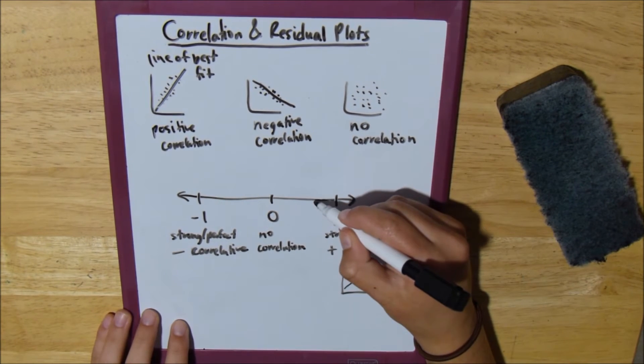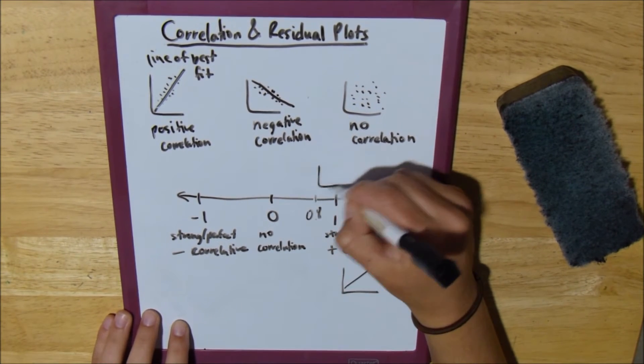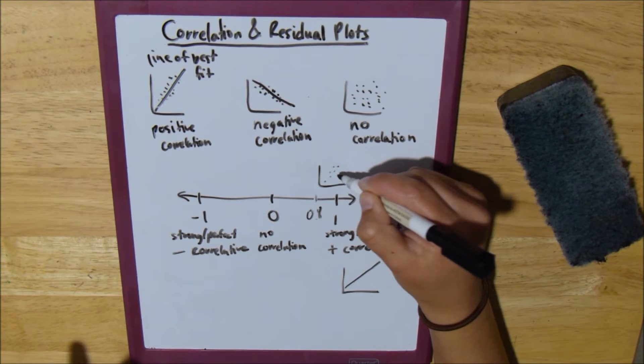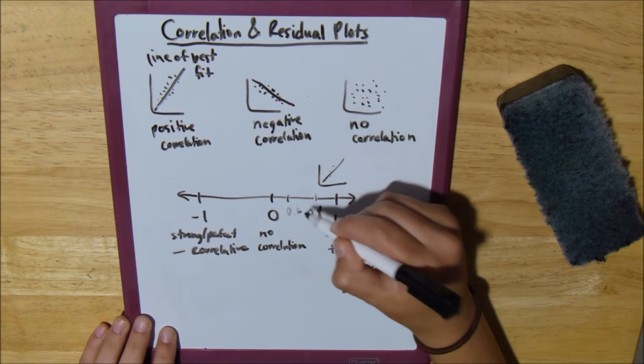Then, as you get to, let's say, something like 0.8 or something like that, your points are a little bit less correlated. And then, say you get to something like 0.2, your points are just less and less correlated.